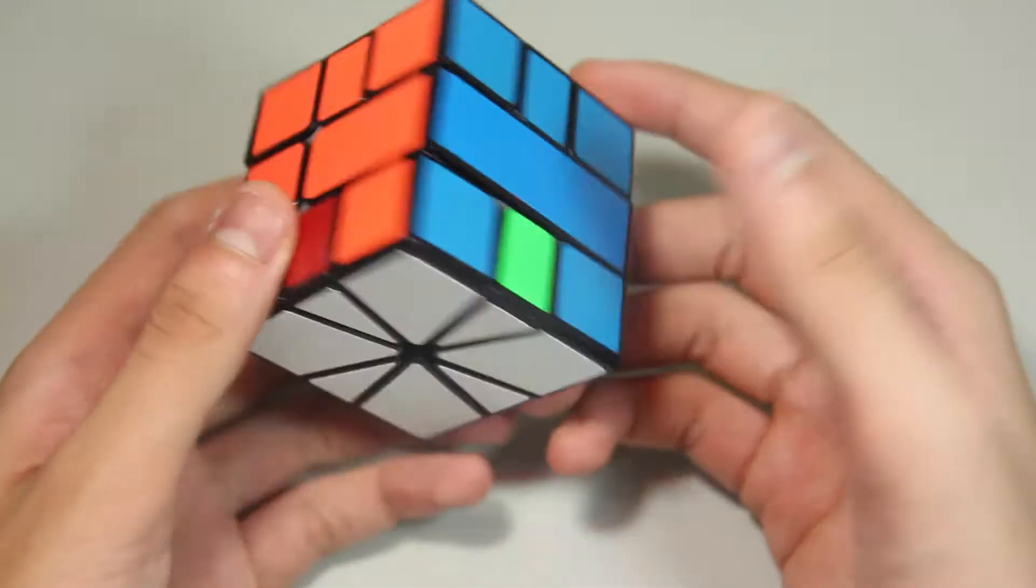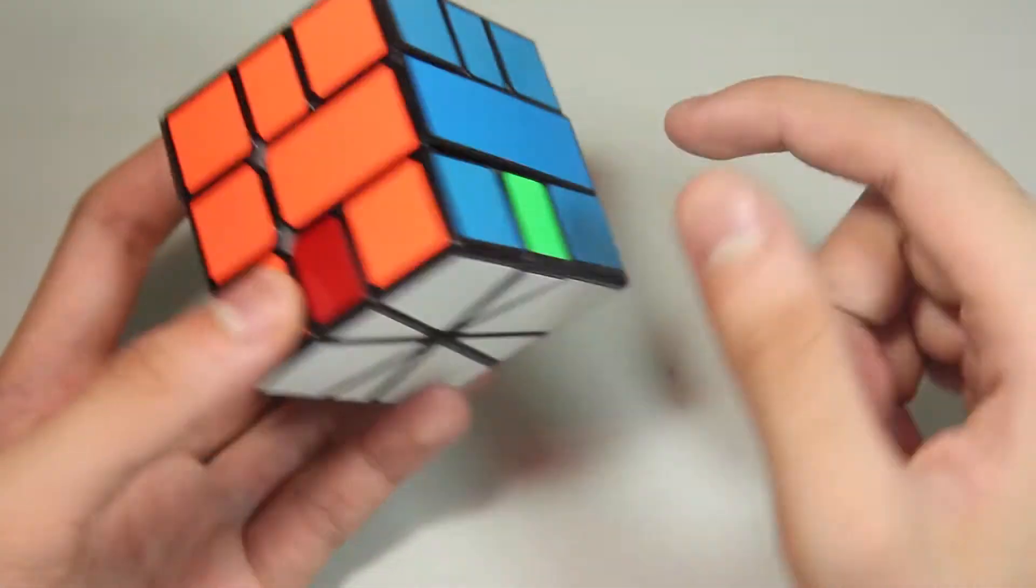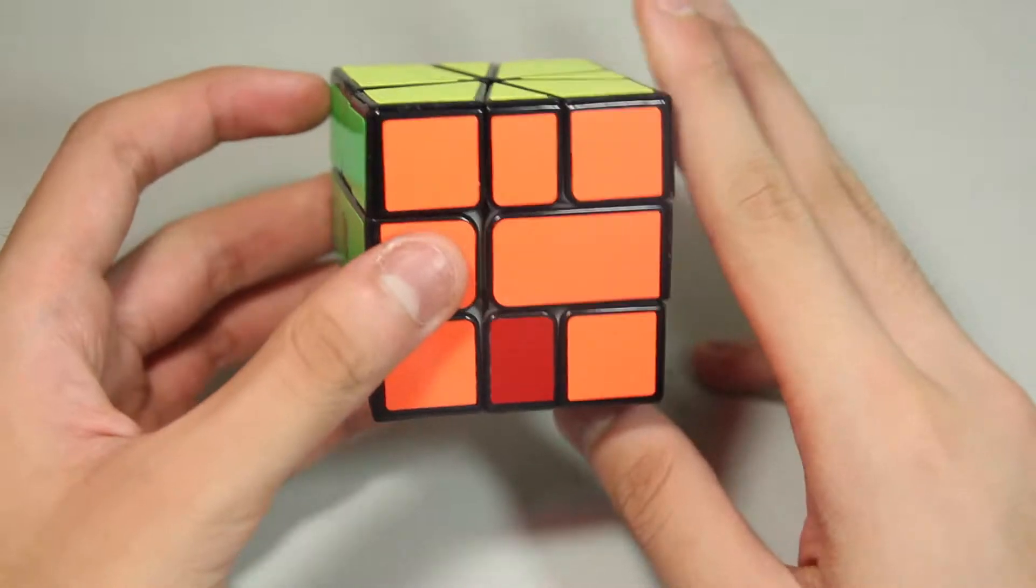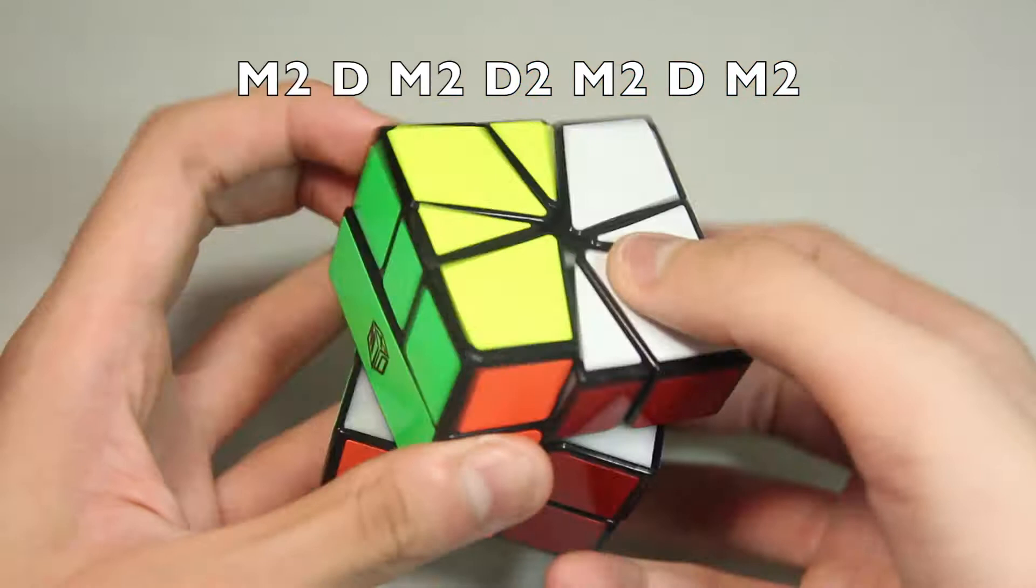It's basically the same thing with the bottom layer. If you have an H perm on the bottom, all you do is the same thing but with D moves: M2, D, M2, D2, M2, D, M2.